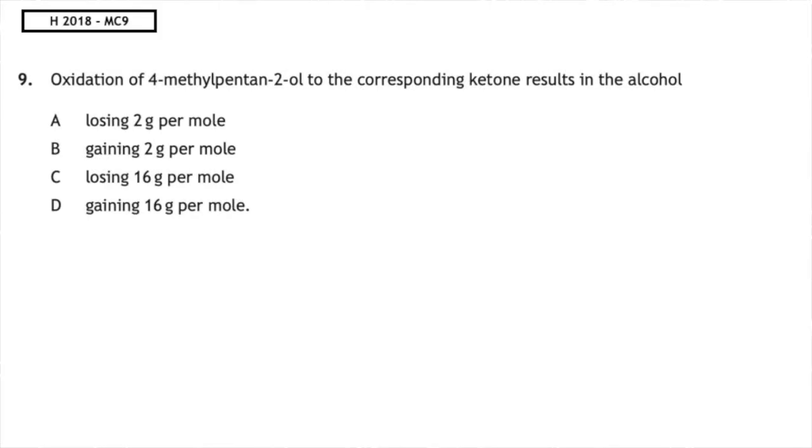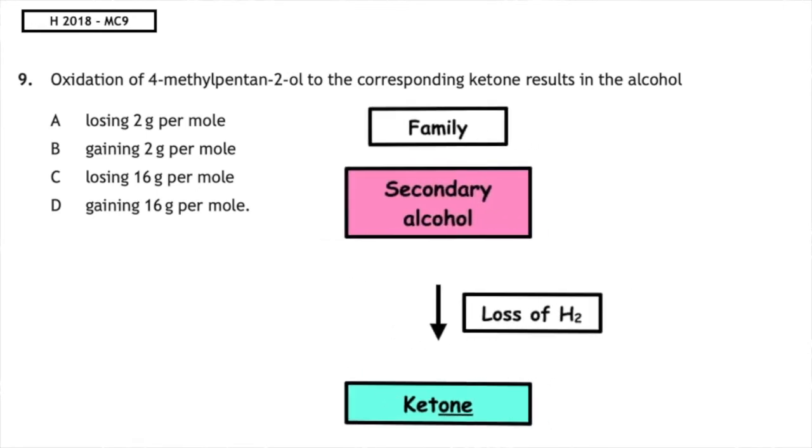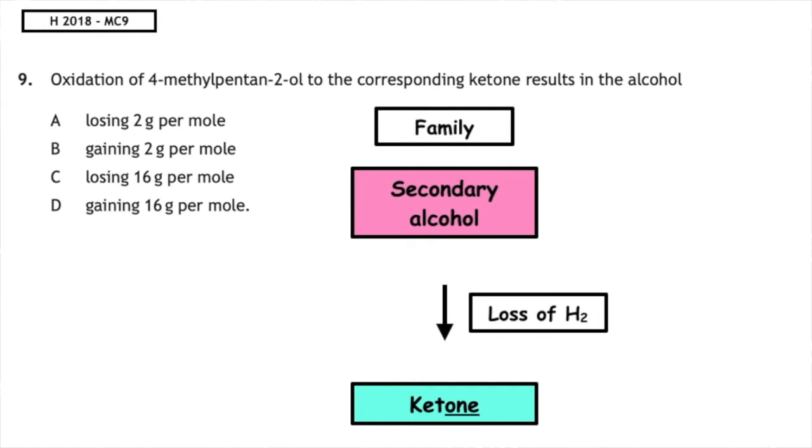This past paper questions from the higher 2018 multiple choice 9. Oxidation of 4-methyl-pentan-2-ol to the corresponding ketone results in the alcohol, and we have options A, B, C and D. What we need to remember is that secondary alcohols undergo the first stage of oxidation which is the loss of hydrogen and the GFM for one mole of hydrogen is 2 grams so the correct answer to this is multiple choice answer A.